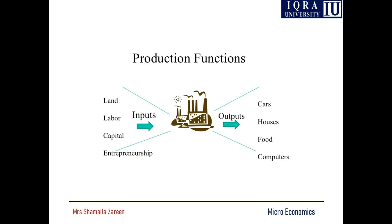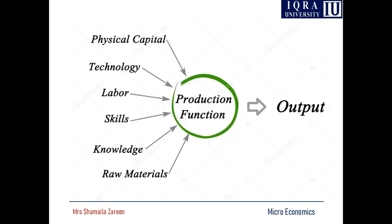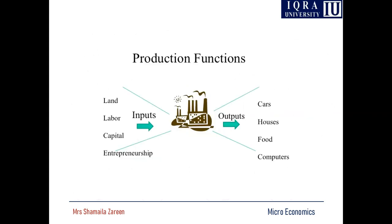The inputs are land, labor, capital, and entrepreneurship — these are the four factors of production. By using these four factors of production you produce cars, houses, food, and computers. By using inputs you are producing output — this is called your production function.